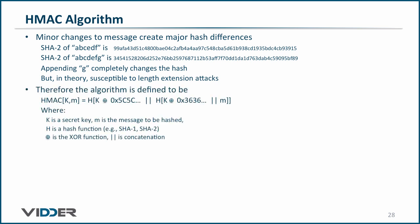Therefore, the actual algorithm used is shown here. Reading from right to left: the key K is shortened via hashing or lengthened via padding with zeros to the hash block size. For SHA-1 and SHA-2, the hash block size is 512 bits, so if you have your choice, choose a 512-bit key. The key is then XORed with the hexadecimal value 0x363636 repeating to the same 512-bit block size. The message is appended to the XORed key and the first hash is taken, where H is typically a SHA-1 or SHA-2 hash. Then the same block-size key is XORed with hexadecimal 0x5C5C5C repeating. To that value, the previous hash is appended and the final hash is taken.